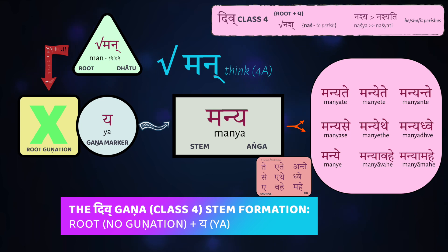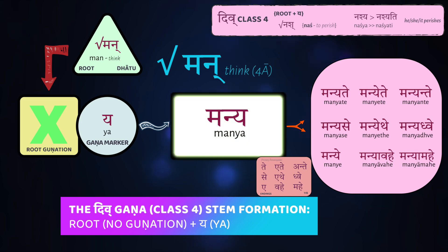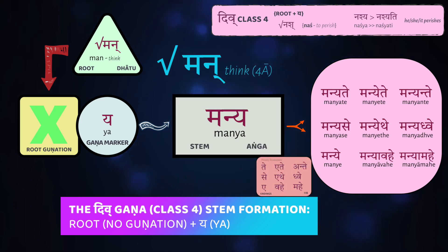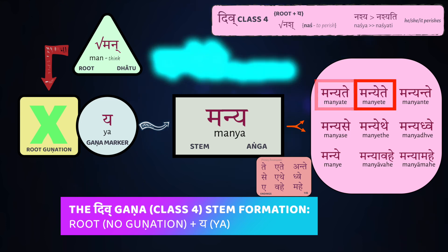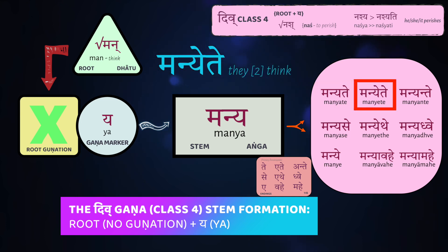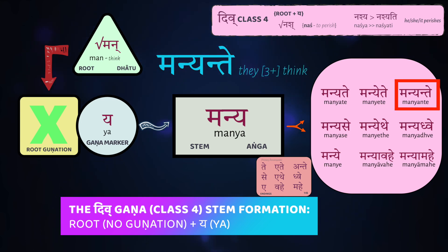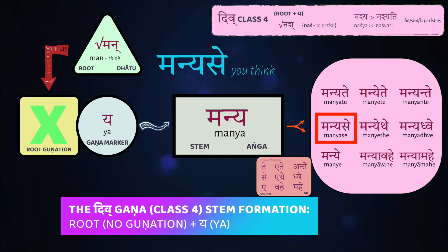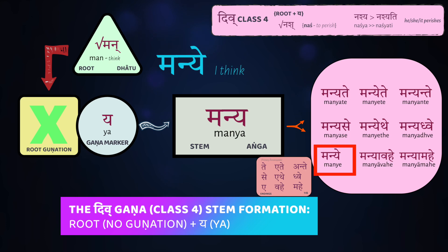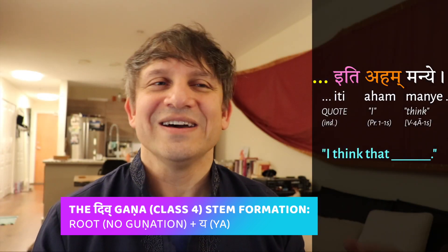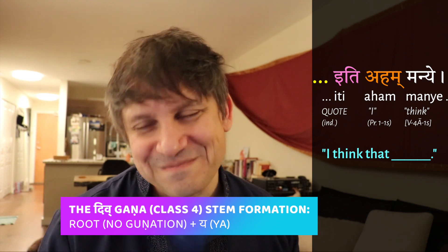The final root we can talk about in the fourth class is the very important verb man, which means to think. This verb is conjugated only in the ātmanepada. We take the root man, don't do anything with it, add our class marker ya and get our stem manya. Then we add ātmanepada endings: Sītā manyate — Sita thinks. Rāmaśca Lakṣmaṇaśca manyete — Rama and Lakshmana both think. Vīrāḥ manyante — the warriors, three or more of them, think. The all-important manyase — you think. And manye — I think. You'll use this one a lot: aham manye, iti aham manye — such and such, I think.